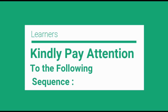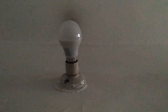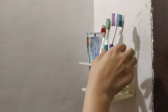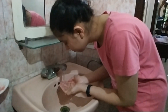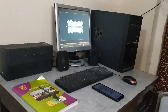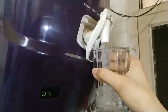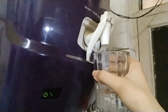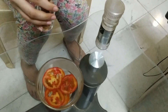Learners, kindly pay attention to the following sequence. A person gets up from the bed in the morning, puts on slippers, goes to the washroom, switches on the bulb, stands in front of the wash basin and mirror and brushes her teeth, washes face and applies cream. She comes to the living room and picks up the mobile near a computer. Then she goes to the kitchen and drinks water in a glass tumbler. Then she takes some tomato and sprinkles salt.